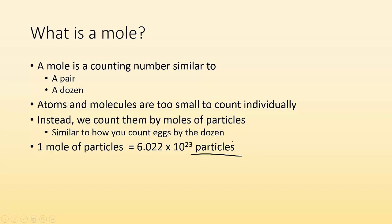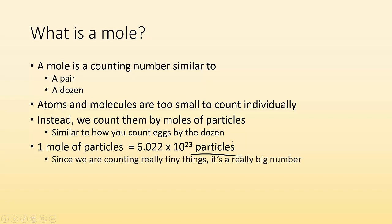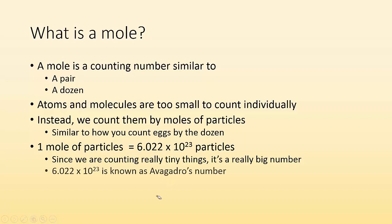You have 6.022 times 10 to the 23 particles in a mole. Since we're counting really tiny things, it makes sense that this is a really big number — that 10 to the 23 means it is a big number. So 6.022 times 10 to the 23 is known as Avogadro's number, and sometimes it's abbreviated as a capital N.